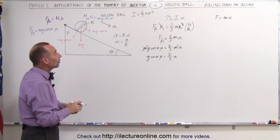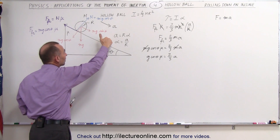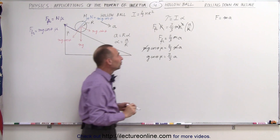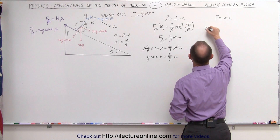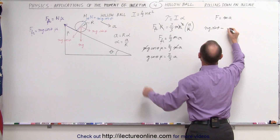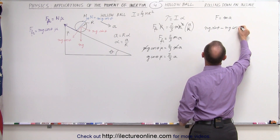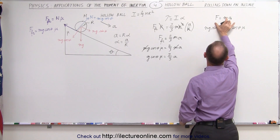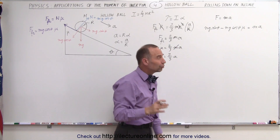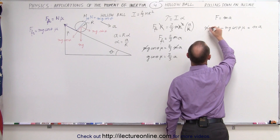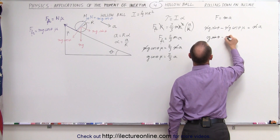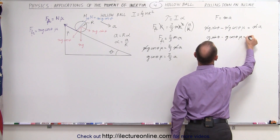We also use F equals ma, since all the forces aiding the acceleration minus all the forces opposing the acceleration equals mass times acceleration. So: mg sine theta minus the friction force mg cosine theta times mu equals mass times acceleration. Every term has an m, so we cancel it, leaving g sine theta minus g cosine theta times mu equals acceleration.